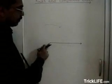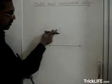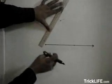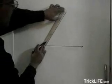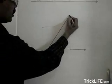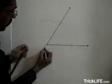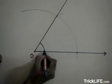Now the endpoint of the ray and this intersection point we join with the help of ruler. So the angle formed at this particular corner gives the measure of 60 degrees.